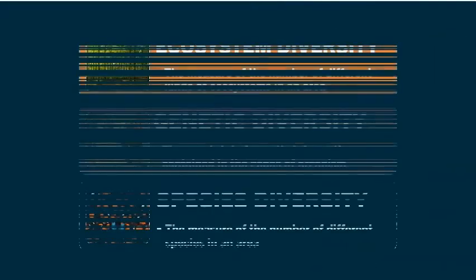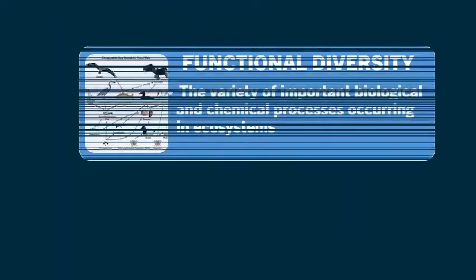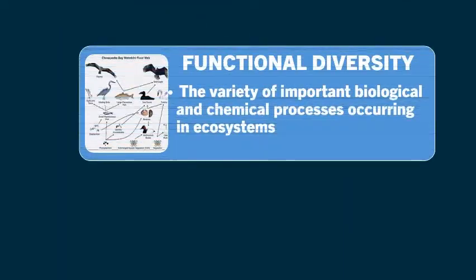The four components of biodiversity are: ecosystem diversity, genetic diversity, species diversity, and functional diversity.